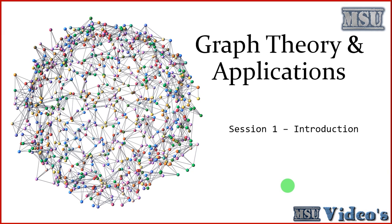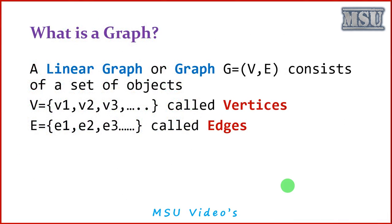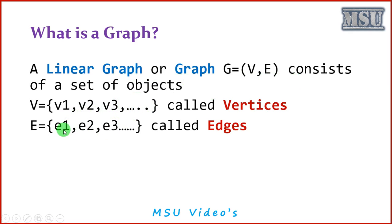In this video lecture, we are going to discuss some introduction to graph theory. First of all, we know that a graph contains a set of vertices and edges. A graph is normally called a linear graph also. So a graph G = (V, E), where V contains the set of vertices and E contains edges E1, E2, up to En — it may contain any number of edges.